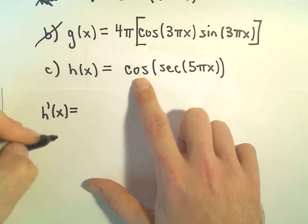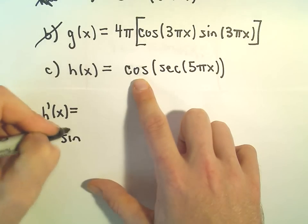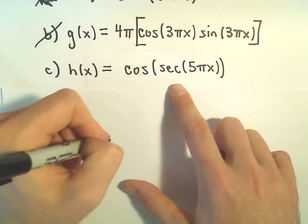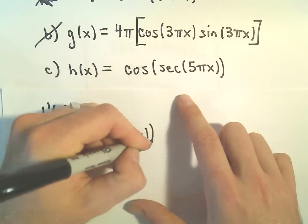So the derivative of cosine, that'll be the outside part, we get negative sine. Now we leave the inside stuff alone. We leave the secant of 5 pi x all alone.